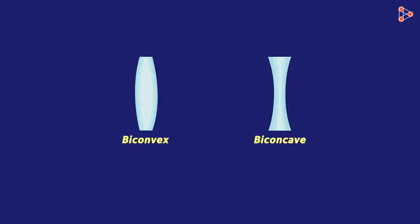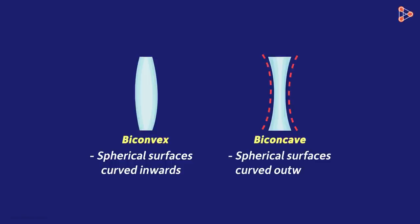In a biconvex lens, the two spherical surfaces are curved inwards. And in a biconcave lens, they are curved outwards.